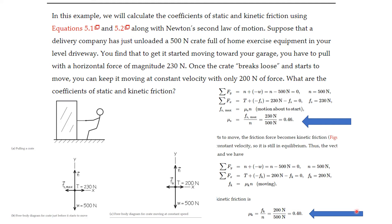A similar calculation applies for kinetic friction. To move the crate at constant velocity in the x direction requires only 200 newtons, and now it's moving so we use kinetic friction: F sub k = mu sub k times N, giving 200 = mu sub k times 500. Solving, the coefficient of kinetic friction is 0.4. This is less than the static coefficient of 0.46, consistent with what we discussed.